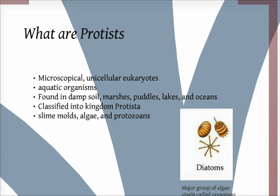Protists are all eukaryotic organisms, besides animals, plants, and fungi. They are subdivided into three groups: slime molds, algae, and protozoans.